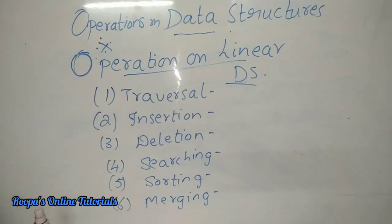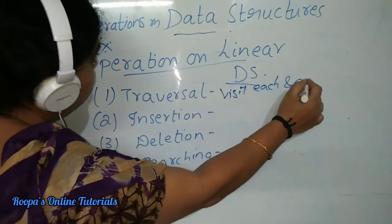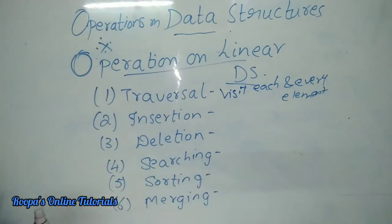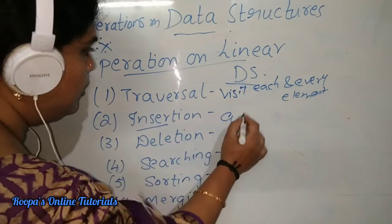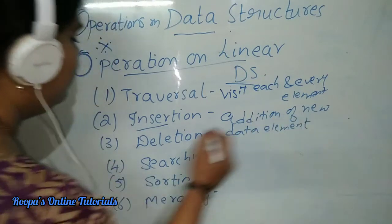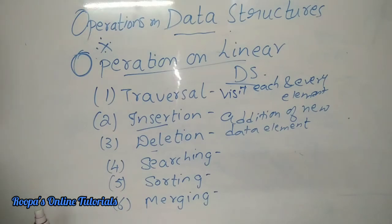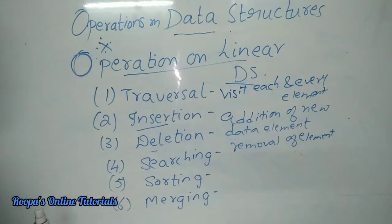Traversal means to visit each and every element in the data structure — that is known as traversing an array. Insertion means the addition of a new data element to the data structure. Deletion is the removal of an element from the data structure, which is known as deletion.